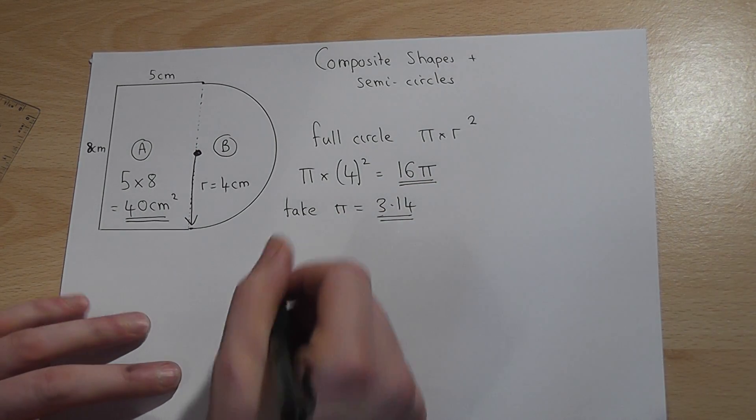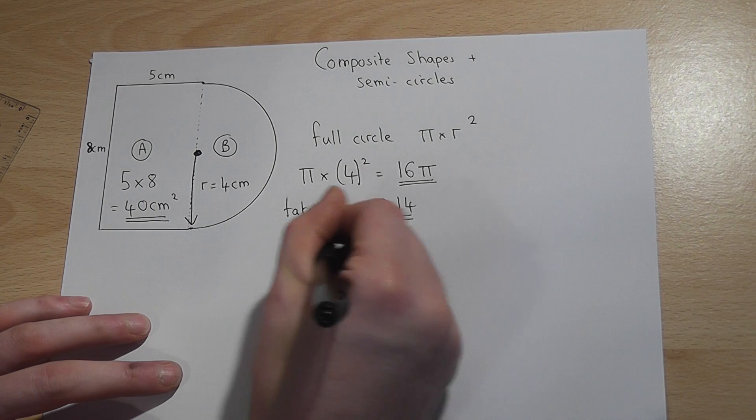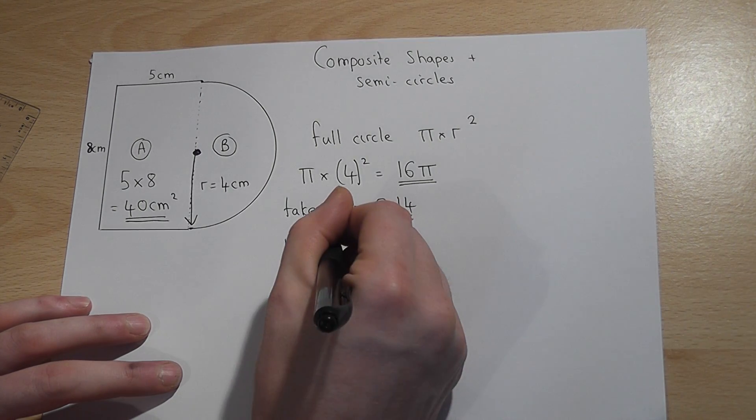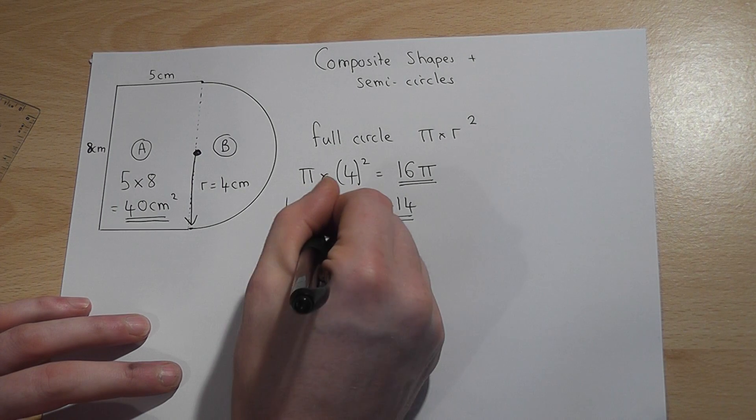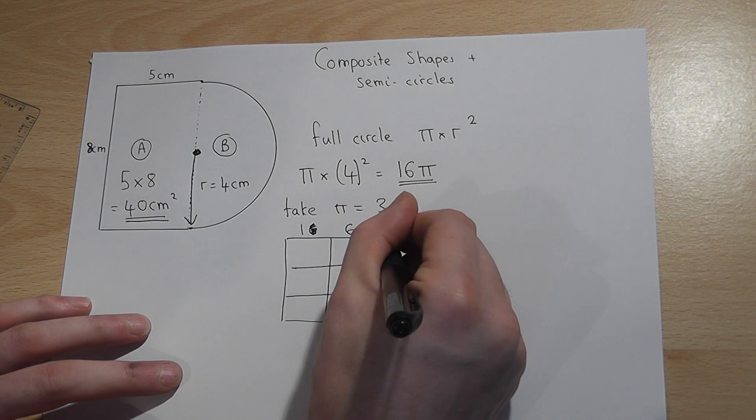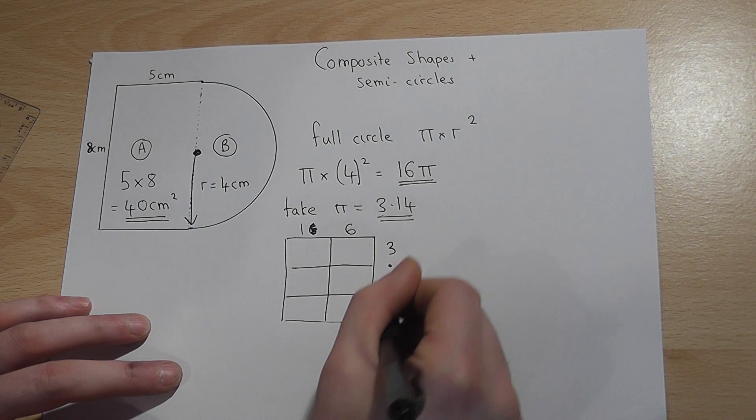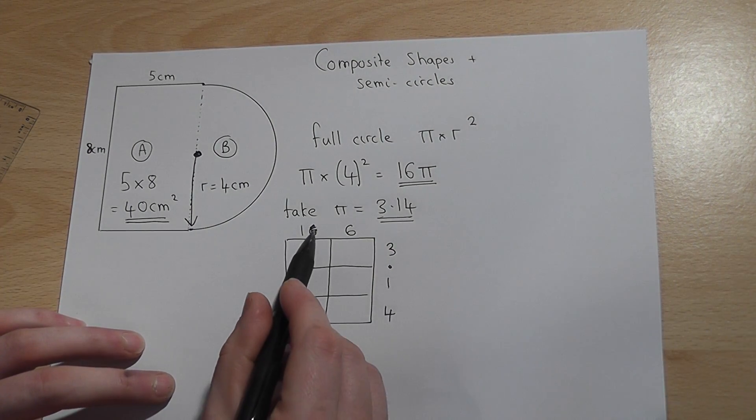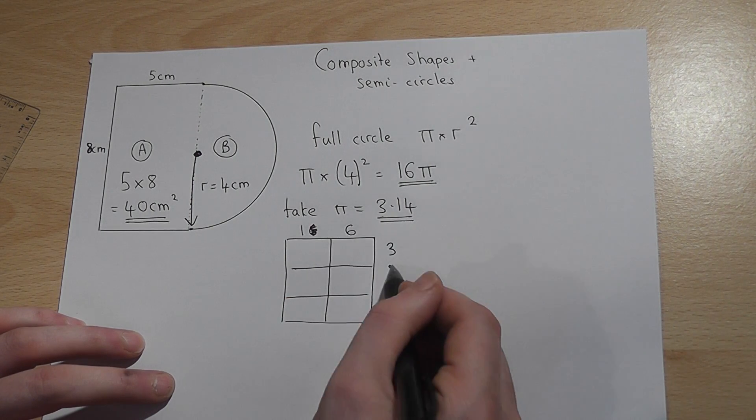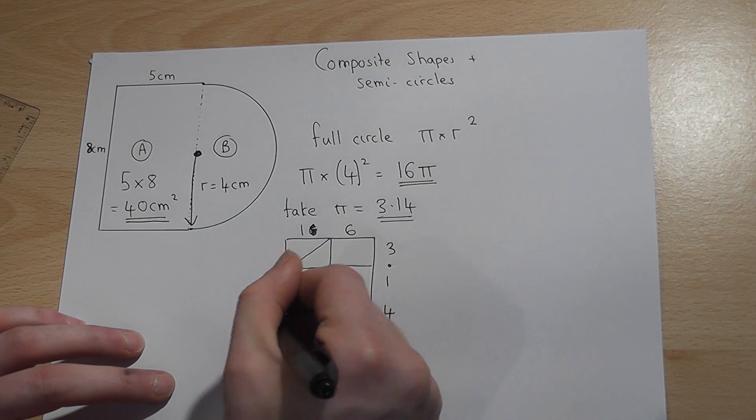We therefore have to work out what 16 lots of 3.14 actually is and I find the grid method is often the easiest way of working that out. We've got 16 times 3.14, put down our diagonals.